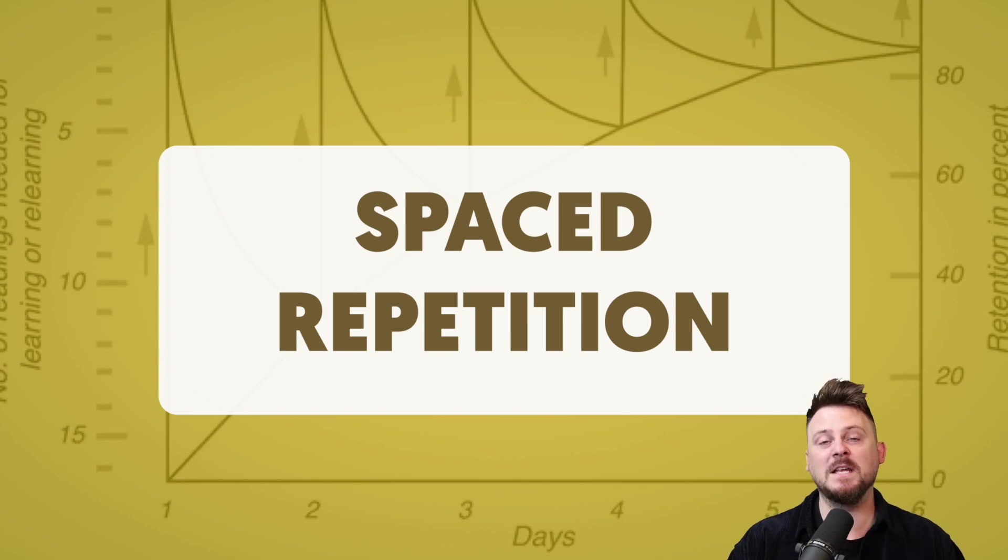And one of them is spaced repetition. So we're going to talk about how it works. We're going to talk about how you can use it to memorize English words, but then how you can make sure that you're not just memorizing things and then you can't use what you learn. Because just memorizing randomly and not being able to use what you memorize is useless. Because English is a language you need to be able to communicate in the language.